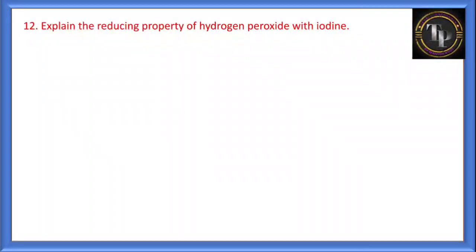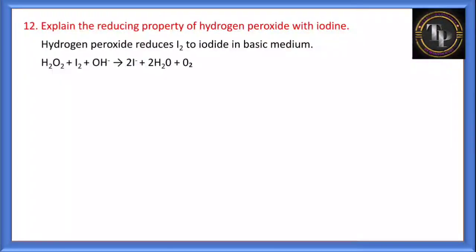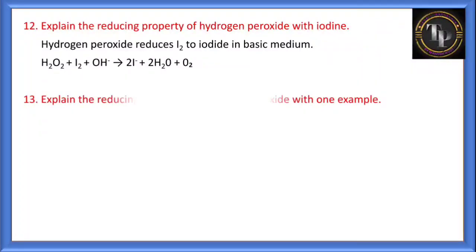Explain the reducing property of hydrogen peroxide with iodine. H2O2 can act as both an oxidizing agent and a reducing agent. With iodine in basic medium: I2 is converted to I⁻. I2 has zero oxidation state; I⁻ has −1 oxidation state. Decrease in oxidation number is reduction — I2 is reduced to I⁻ by addition of electrons. Therefore, H2O2 acts as a reducing agent here.